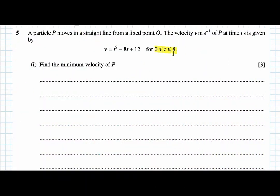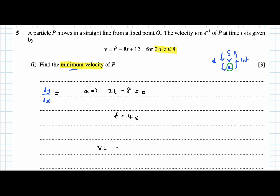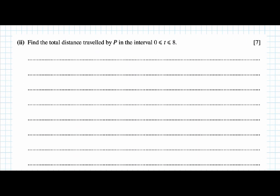Question five: a particle moves in a straight line with variable acceleration. We must find the minimum velocity for v = t² − 4t + 12 between t = 0 and t = 8 seconds. Differentiating to get acceleration dv/dt = 2t − 4 = 0 gives t = 4 seconds. Substituting back, the minimum velocity is 4² − 4(4) + 12 = −4, wait — the minimum velocity for P is −4 meters per second. Next, find the total distance.